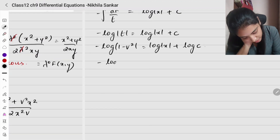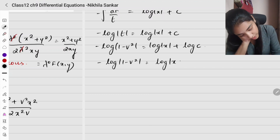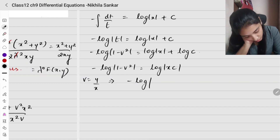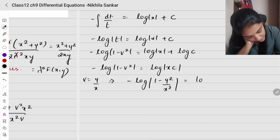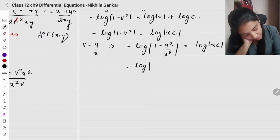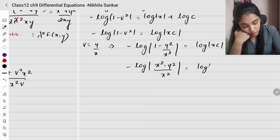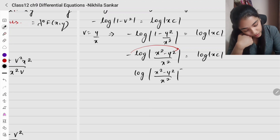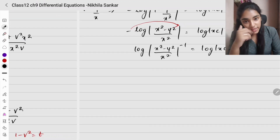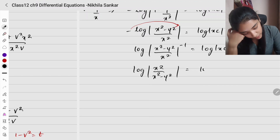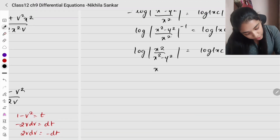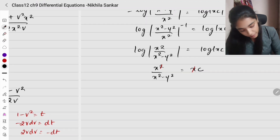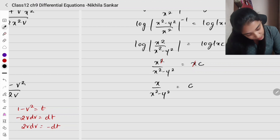Substituting back v = y/x: minus log|1 minus y squared/x squared| equals log|xc|. Taking LCM inside: minus log|(x squared minus y squared)/x squared| equals log|xc|. The negative sign brings it to a power: log|x squared / (x squared minus y squared)| equals log|xc|. Equating: x squared divided by (x squared minus y squared) equals xc. Cancelling one x: x divided by (x squared minus y squared) equals c.